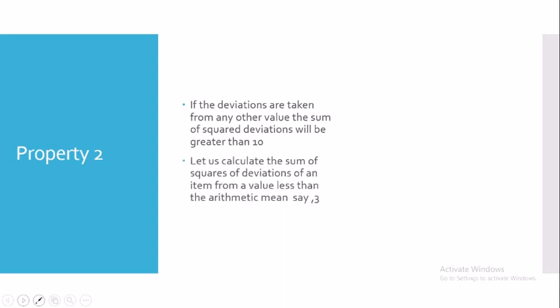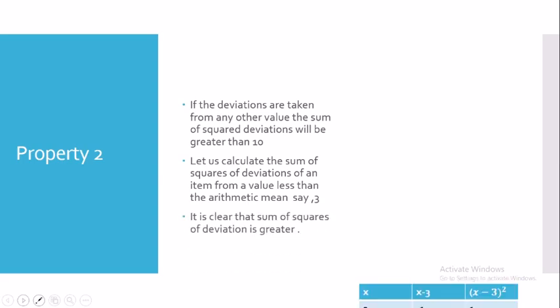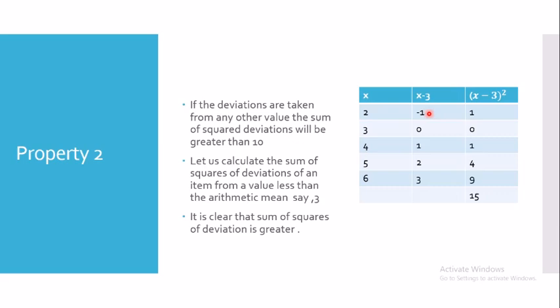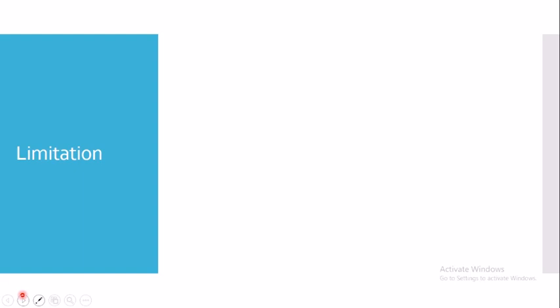To verify this, let's take the value 3 — which is less than the arithmetic mean — and calculate the sum of squared deviations. Taking the difference between each observation and 3, squaring, and summing gives 15, which is indeed greater than 10. This confirms that the sum of squared deviations is minimum when taken from the mean.